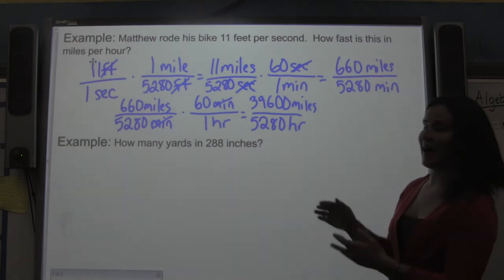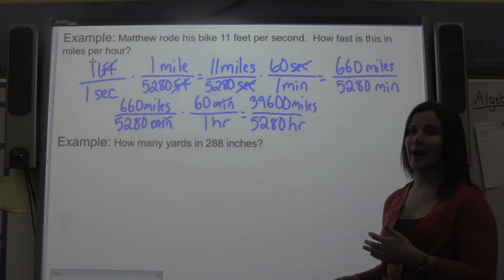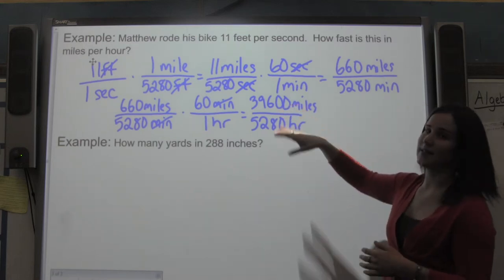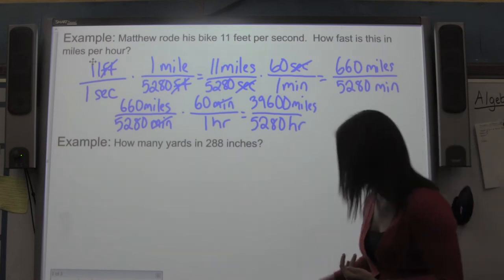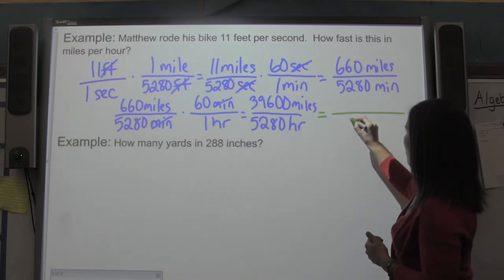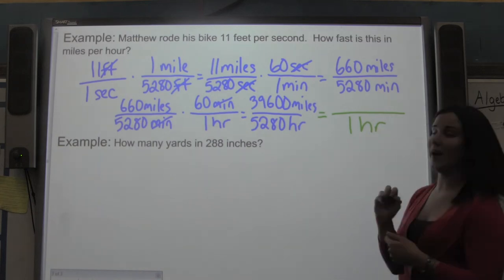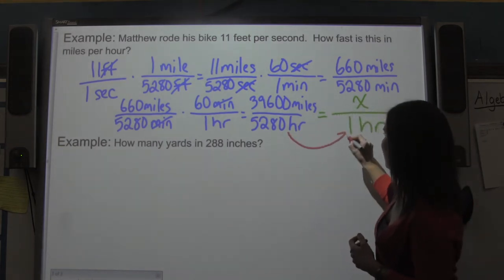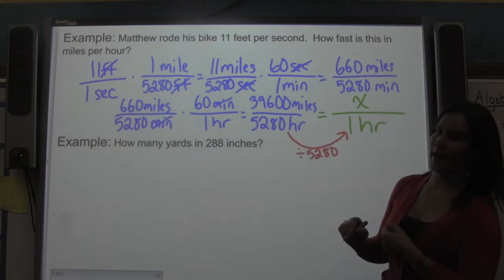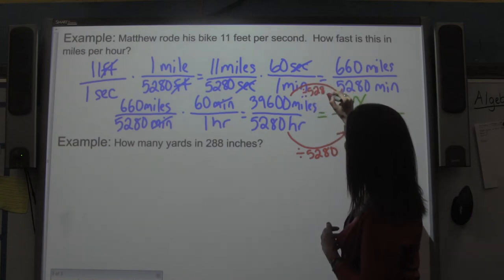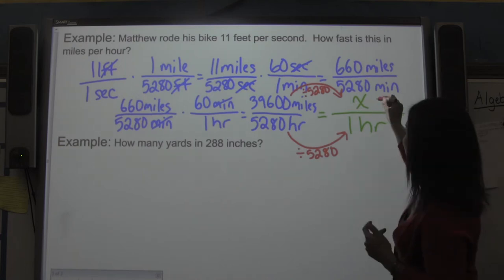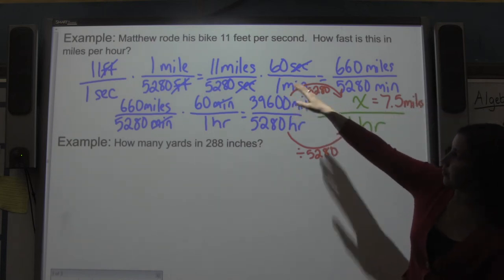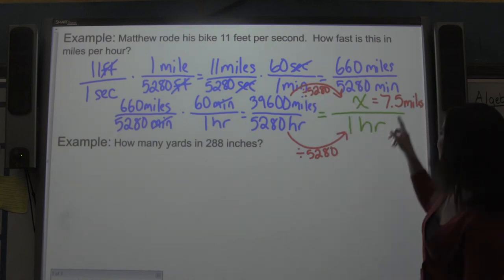The question asked for miles per hour, so saying 39,600 miles in 5,280 hours doesn't make sense on its own. I need to convert it to a ratio with 1 hour in the denominator. Using equivalent fractions, I divide both numerator and denominator by 5,280, and x equals 7.5 miles per hour. So if Matthew was riding at 11 feet per second, he was going 7.5 miles per hour.